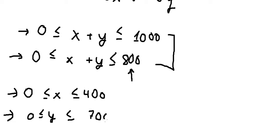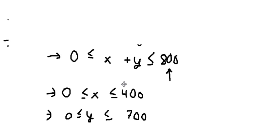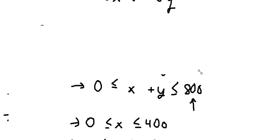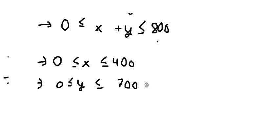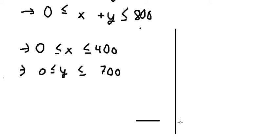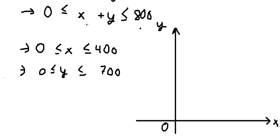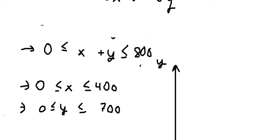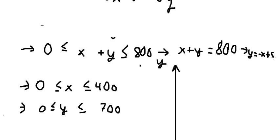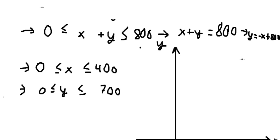After analyzing the constraints, we select the three binding equations. Since X plus Y ≤ 800 is more restrictive than X plus Y ≤ 1,000, we use the 800 constraint. X and Y must be positive numbers since they represent amounts. Rearranging X plus Y = 800 gives us Y = negative X plus 800.